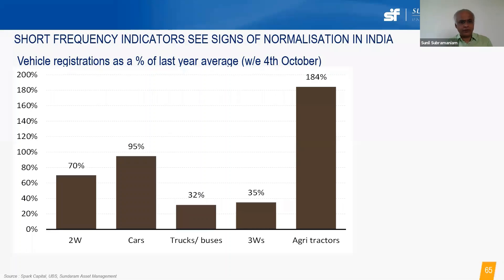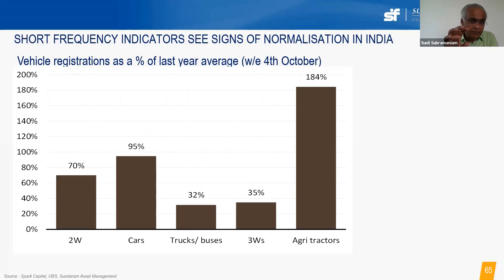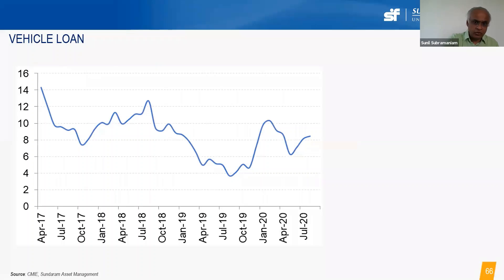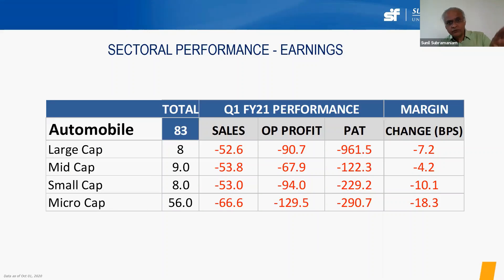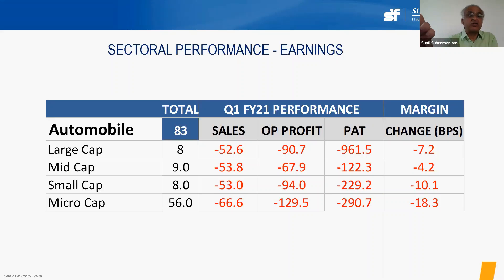Agriculture was the sector that posted 3.4% positive GDP growth even in the deep negative quarter. Comparing vehicle registrations year-on-year: two-wheelers are at about 70% of last year, cars at 95%, tractors at 184%, while trucks, buses, and three-wheelers lag. Auto is a very polarized sector — two-wheelers, cars, and tractors are doing well, but trucks, buses, and three-wheelers are not. Vehicle loans and transport equipment loans have seen a sharp V-shaped recovery.